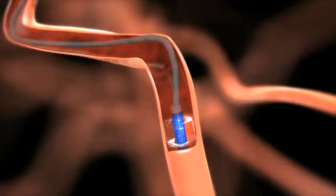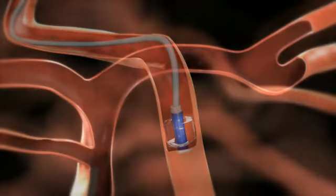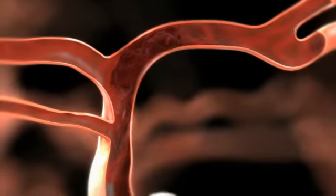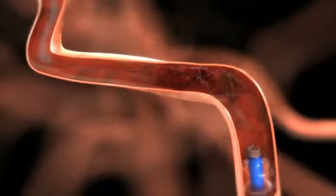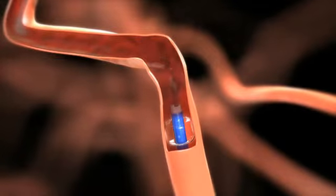Inflate the balloon of the guide catheter to occlude the vessel. To retrieve thrombus, slowly withdraw the microcatheter and Solitaire FR as a unit to the guide catheter tip while applying aspiration to the guide catheter.